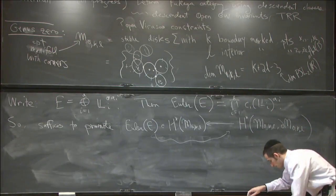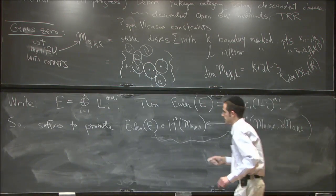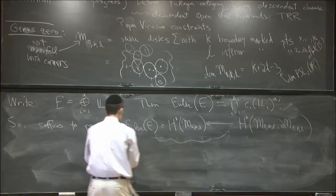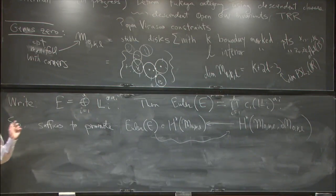The way we can do that is: the claim is there exists a canonical, up-to-homotopy, nowhere vanishing section of E restricted to the boundary ∂M_{0,K,L}.